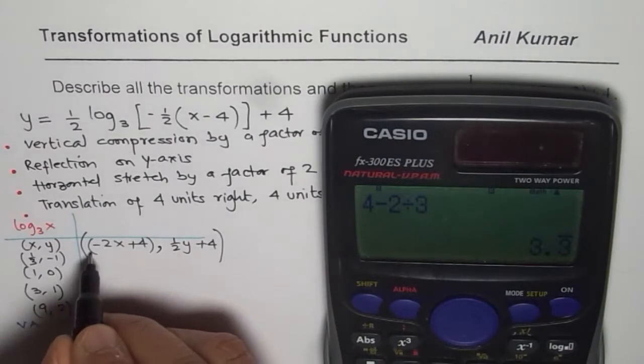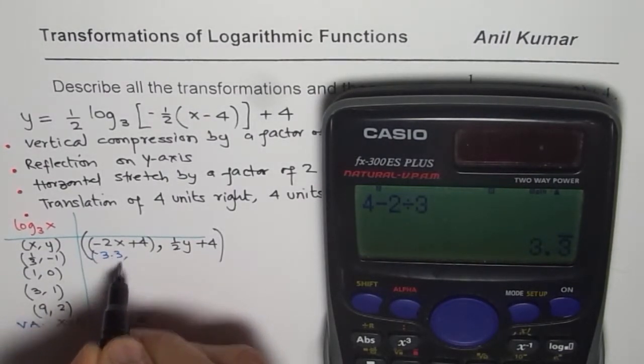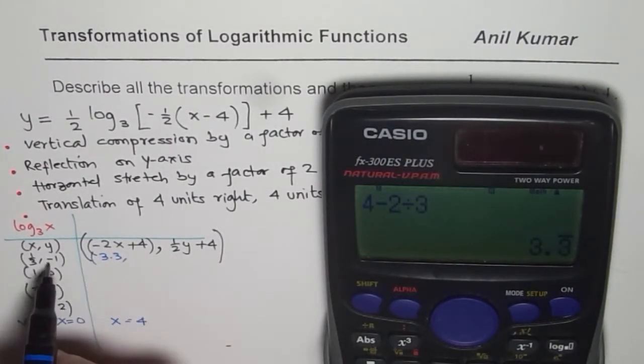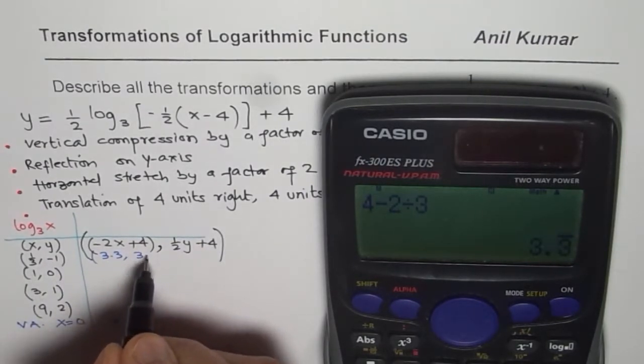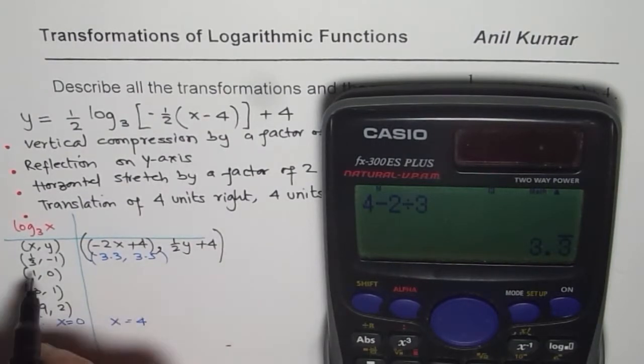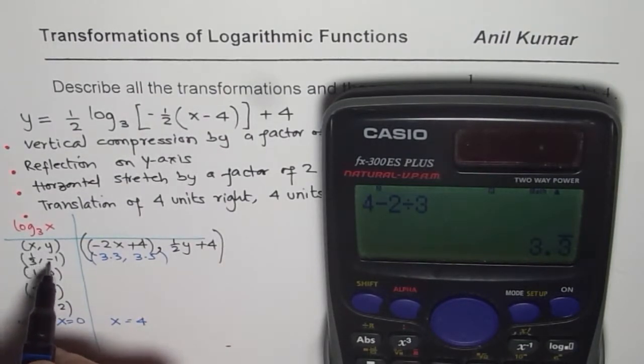So that is the x value 10 over 3, which is approximately 3.3. So this value, x value is 3.3. The y value will be half of minus 1, which is minus 0.5, so it will be 3.5. So that becomes the transformed point for the first point.